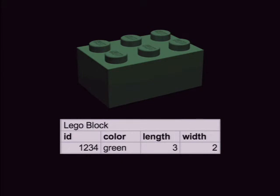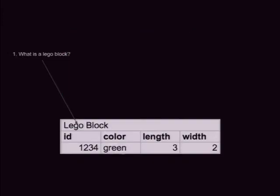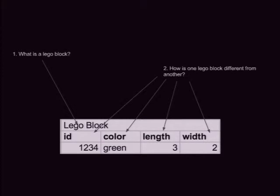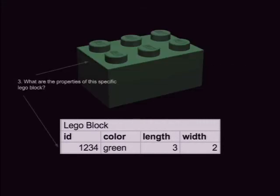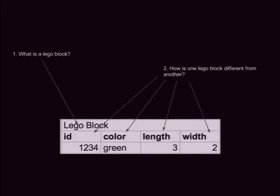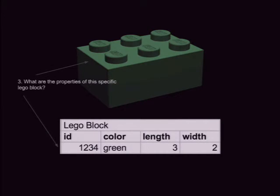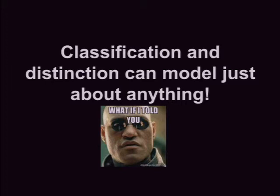Here's a Lego block. Classification and distinction on this: the first layer is, what is a Lego block? Lego blocks are all the same — they're all made out of plastic, they all have bumps on the top and holes in the bottom. How is one Lego block different from another? These are the fields: they've got an ID, a color, a length, and a width. We've been talking about Lego blocks this whole time but haven't described any particular Lego block — it's all about the nature of what it means to be a Lego block. What are the properties of this specific Lego block? Now we're talking about data. Data describes the world.